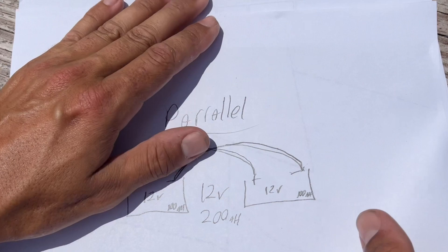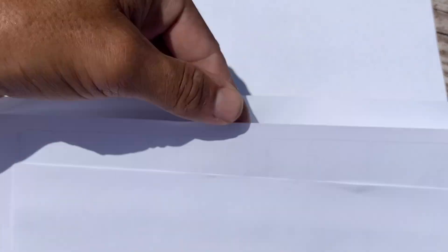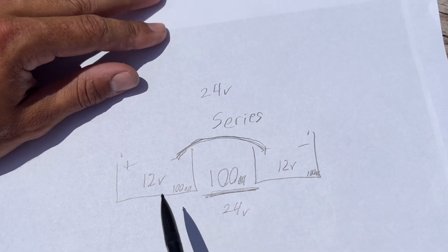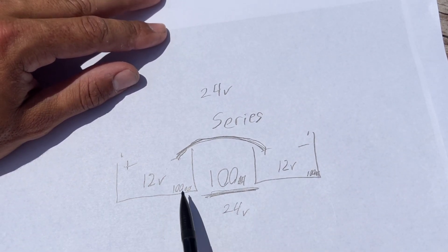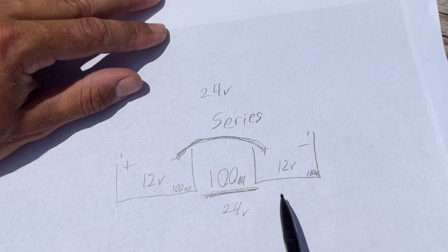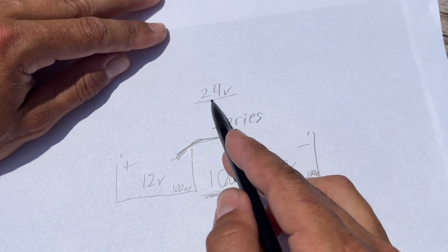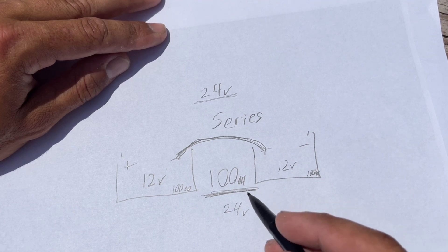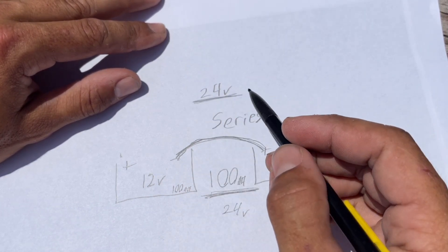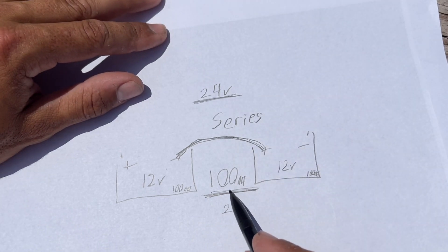Now, if we went back to our series connection, and these were solar panels. Again, you have two 12-volt solar panels that are both at 100 amps each, and you connected the positive one into the negative of the other, and now you have a 24-volt panel, but the 100 amps would stay the same. The amperage does not increase.